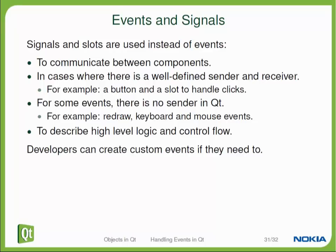With signals and slots, connections to a single signal can be made from different objects, so multiple objects can be called when one signal is emitted. It also works the other way around: multiple signals can be connected to the same slot on one object, even from different senders. Effectively, signal-slot connections are many-to-many ways of communication, while events go to one specific receiver and trigger one specific action.